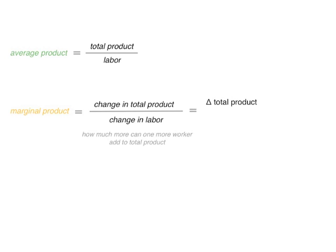It's often written as delta total product, which means change in total product divided by change in labor. And that equals total product divided by one in this example here and I'll discuss that more. One last point of interest is the marginal product is the slope of the average product line.